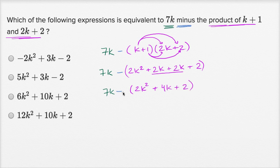And now we can distribute this negative sign, or you could even view this as minus 1 times all of this. And so this is going to be the same thing as 7k minus 2k squared, minus 4k, and then minus 2.